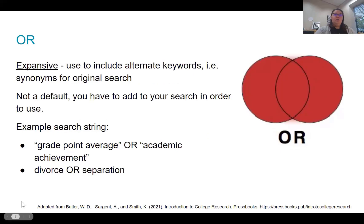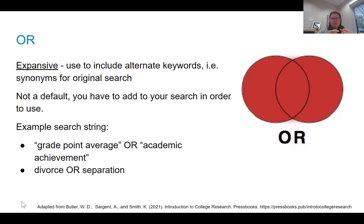OR is expansive. You use OR when you need to include alternate keywords — things that are synonyms for the original term, or things that are close to it. For example, depression or anxiety, since those two mental health issues often appear together. OR is not a default, so you're going to actually have to add it into your search string for the databases to recognize it. AND is a default; OR is not.